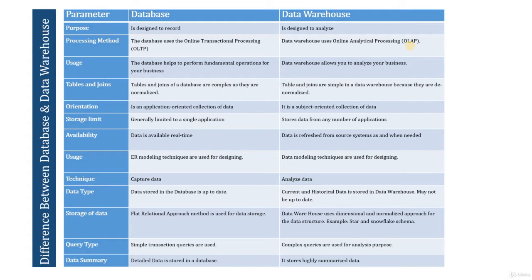Pay attention because this is very important for understanding the concept between database and data warehouse — you might face the question: why use a database versus a data warehouse for historic data? The next parameter is storage limit. In database, the storage limit is limited to a single application, while in data warehouse it can store data from any number of applications. Each department has its own dedicated database, while data warehouse stores data from multiple applications.